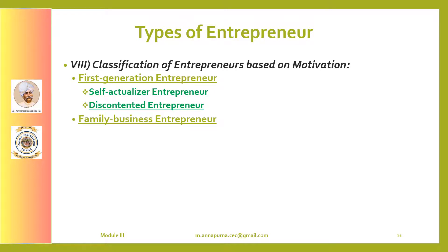The second type of entrepreneur based on motivation is the family business entrepreneur. Family business entrepreneurs are followers of family tradition and role models. A typical example is Aditya Vikram Birla, who created about 75 factories for his business group in a career span of 25 years. Aditya Birla was the son of industrialist Basant Kumar Birla, and his group is now managed by his son Kumar Mangalam Birla.